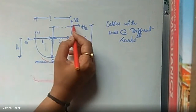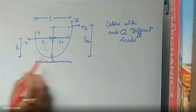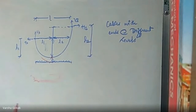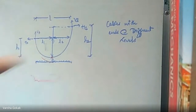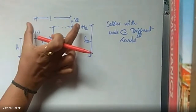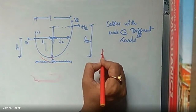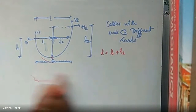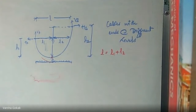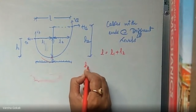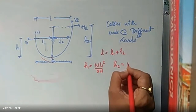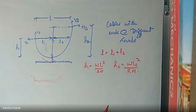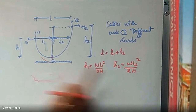This is the cable. A and B are its two end supports. Point C is this point. Because they are at different levels, I will have H1 for support A and H2 for support B. The length will vary, so I will have L1 and L2. The entire span is L, so the condition is L1 plus L2 equals L. H1 is WL1 squared divided by 2H, and similarly H2 is WL2 squared divided by 2H.